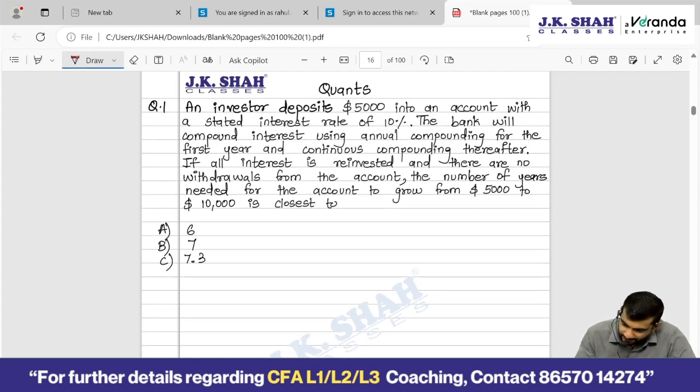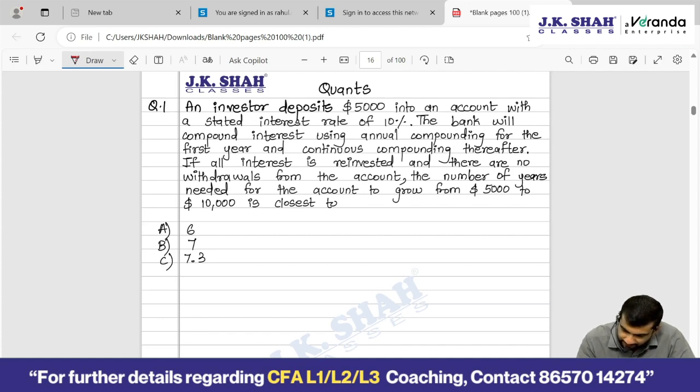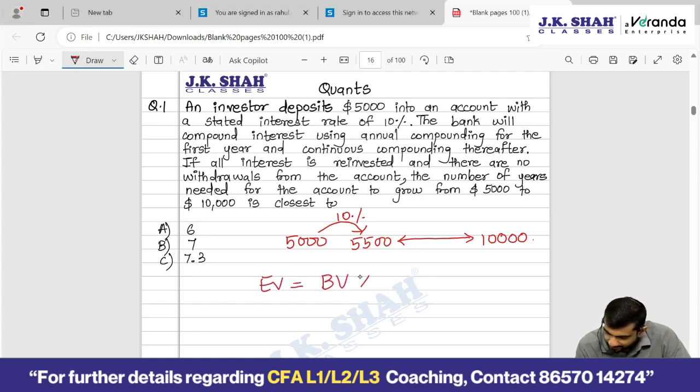So for the first year it is compound interest and annual compounding. So $5,000 at 10% for first year becomes $5,500. And thereafter this $5,500 is compounded at continuous compounding and it grows to $10,000. Now if you remember the continuously compounded rate formula: Ending value equals beginning value times exponential RT, where R stands for rate of interest and T stands for time period.